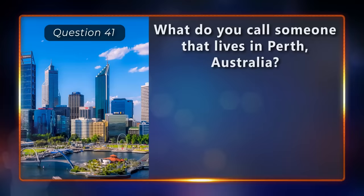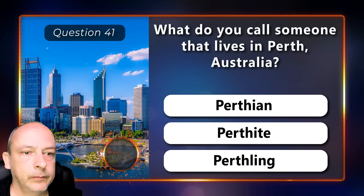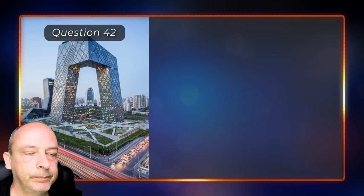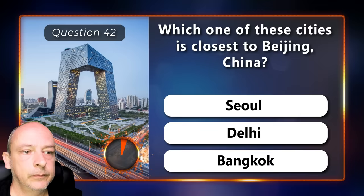What do you call someone that lives in Perth, Australia? Is it a Perthian, a Perthite, or a Perthling? They are called Perthites. Which of these cities is closest to Beijing, China? Is it Seoul, Delhi, or Bangkok? Seoul is the closest.